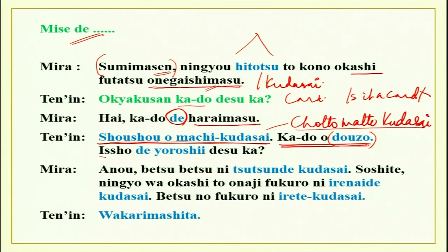Isho de yoroshi desuka. Isho ni means together with. Isho de yoroshi desuka — is it alright if I put it together? Isho de. Yoroshi is very, very polite for ii — is it alright? Is it okay? Ii desuka?